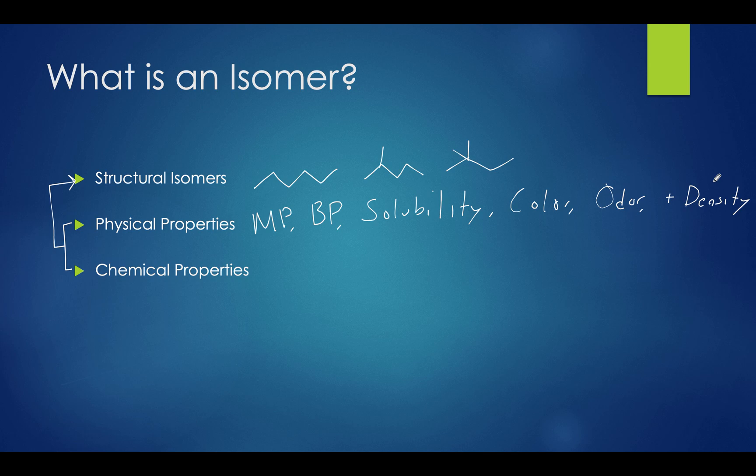Chemical properties, on the other hand, are properties that do change the composition of your molecule. So this often occurs when there is a change in the configuration of your functional groups in your molecule. So when you think about chemical properties, think of changes in functional groups.